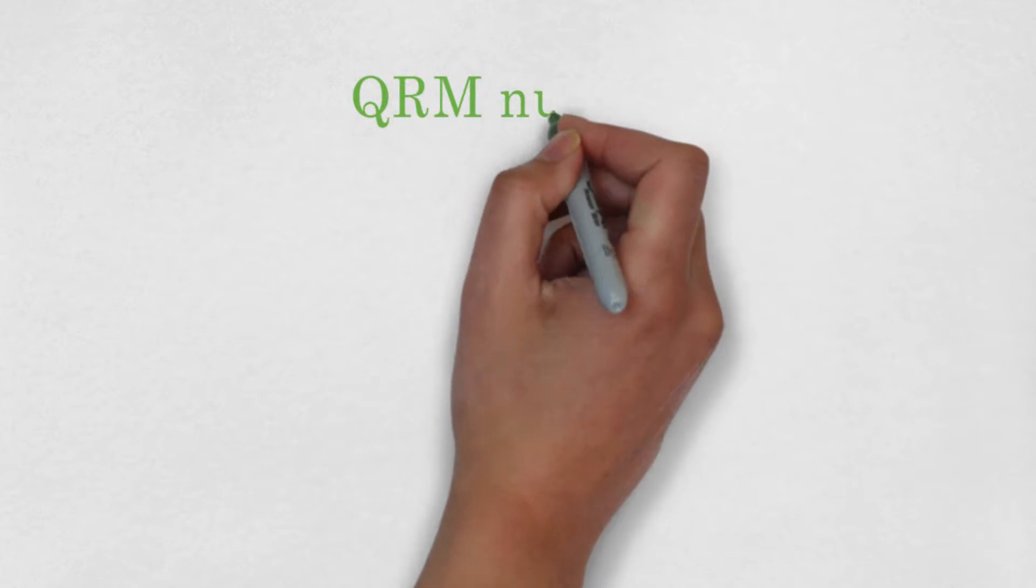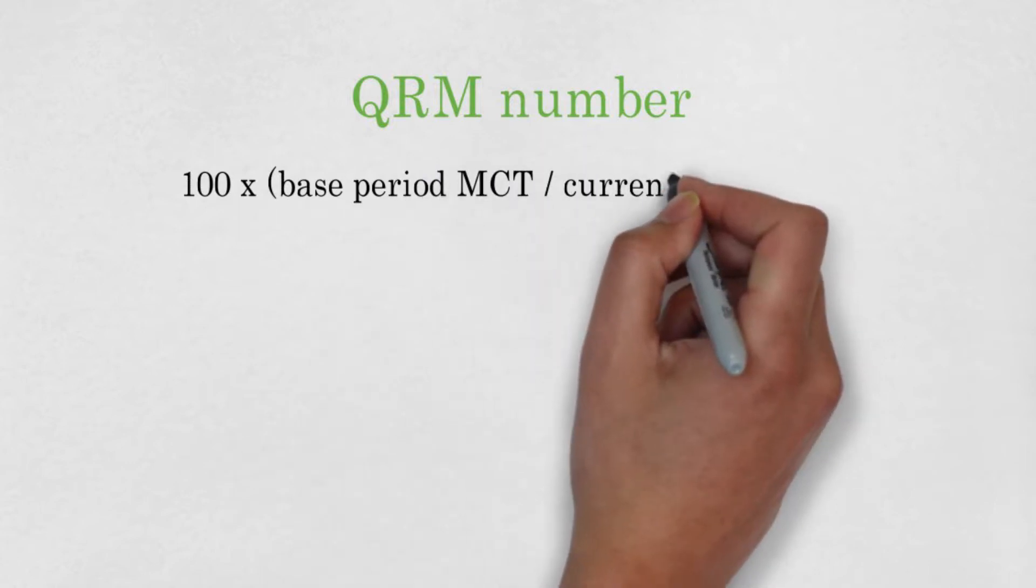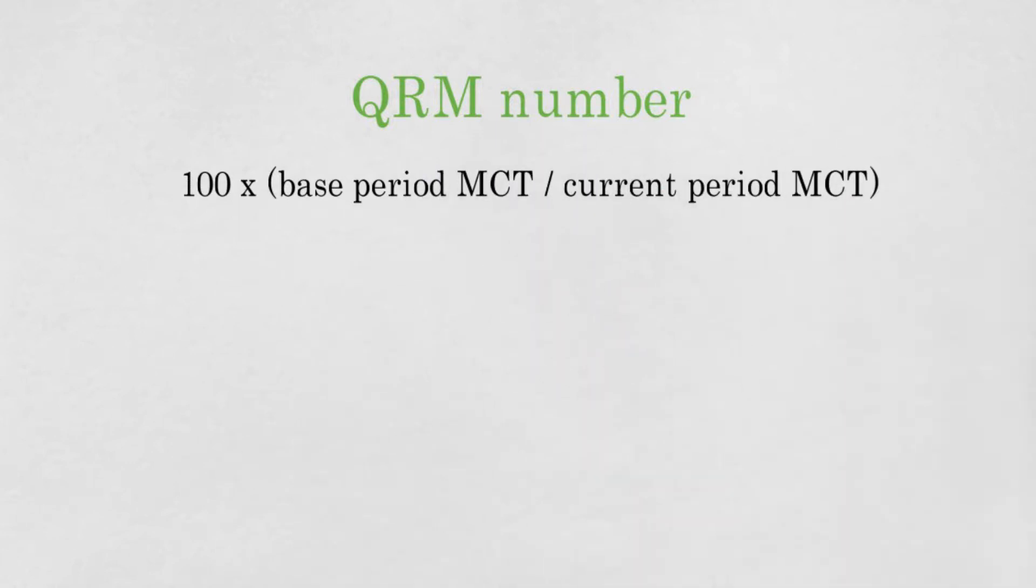Then we go to the next measure that makes use of a formula and this is the QRM number. The QRM number is an MCT based metric that helps to motivate MCT reduction in the organization. The QRM number is defined as 100 times the base period MCT divided by the current period MCT. The base period MCT is the MCT you start with at the beginning of your improvement process. Before I give some examples, it is important to mention that the base period MCT is dependent on the goal of your project.